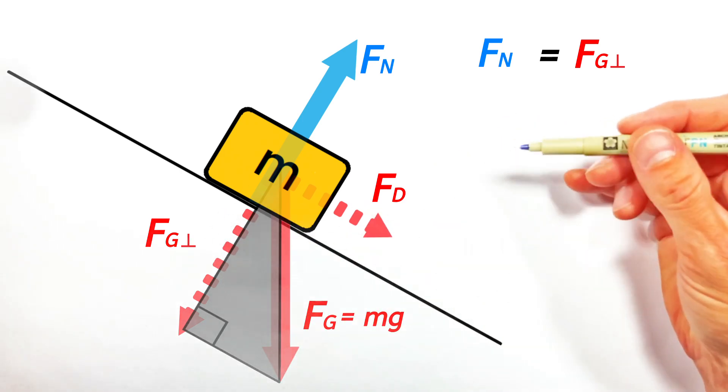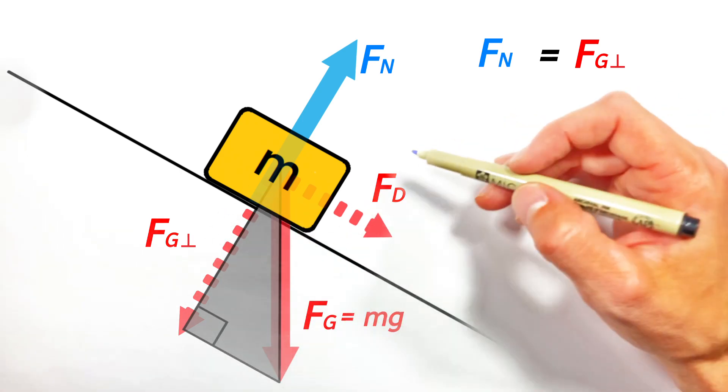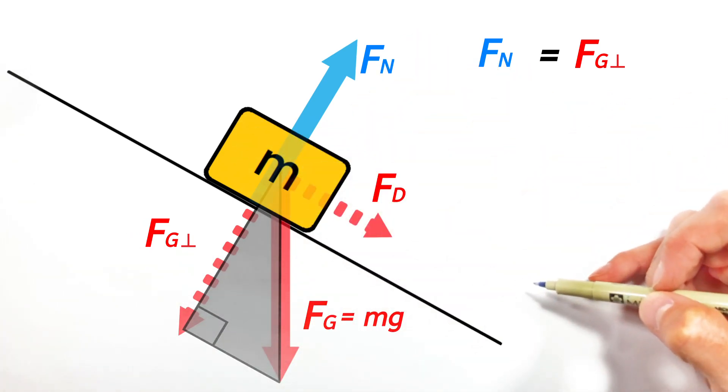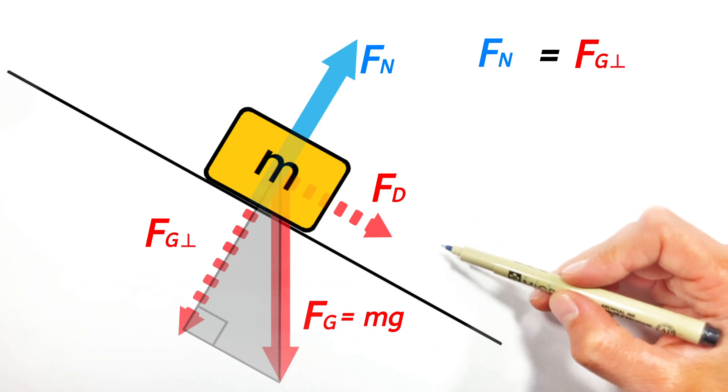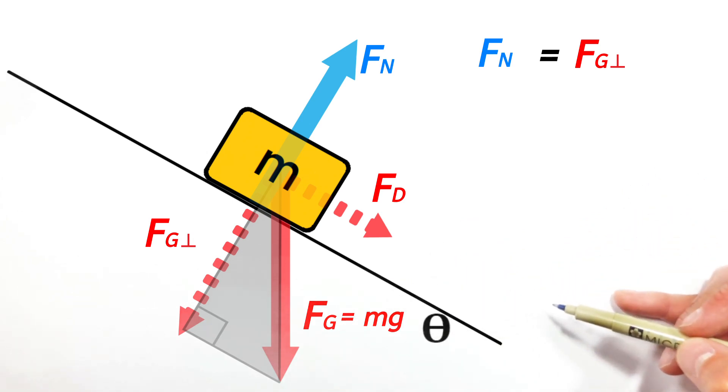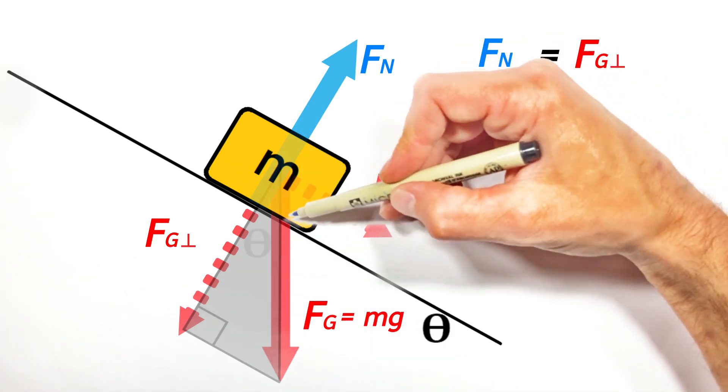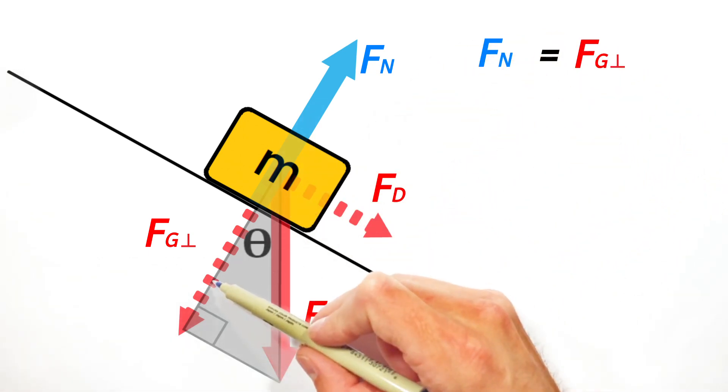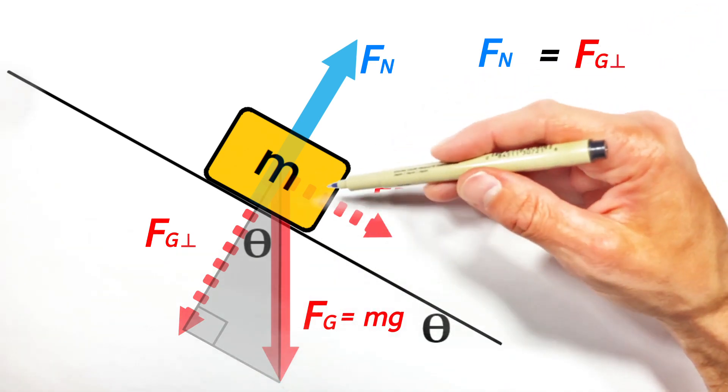Now, if we want to solve for the magnitude of Fn, what we need to do is somehow relate the geometry of this triangle to the hill itself. You see, if the hill is tilted at some angle, I'm going to call that theta, above the horizontal axis, that means this angle right in here between the weight downward and this component perpendicular to the hill is also theta.